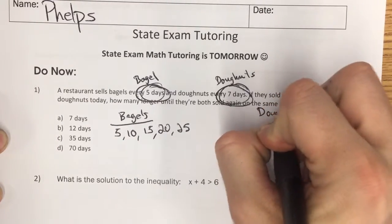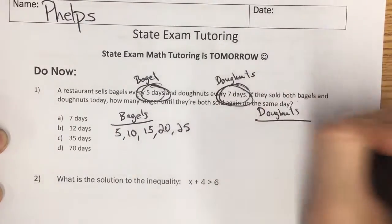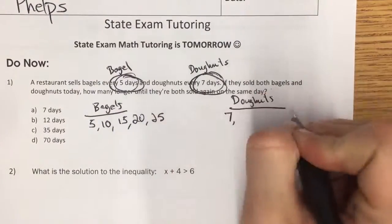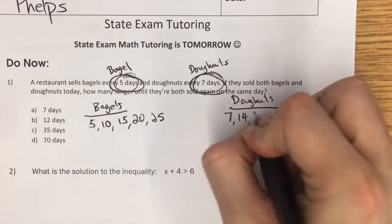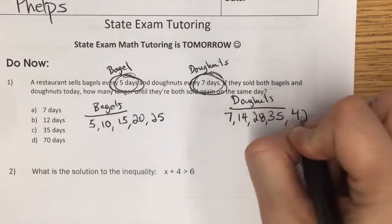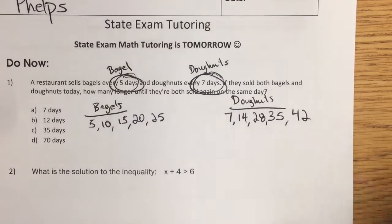I'll just put a donut here. So they sold them today and then seven days from now, 14, 28, 35, 42 days. Because it's every seven days.